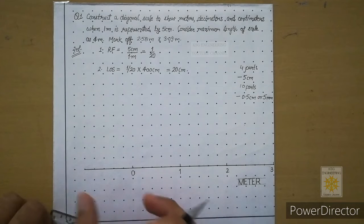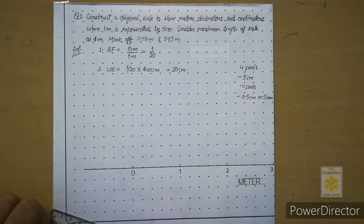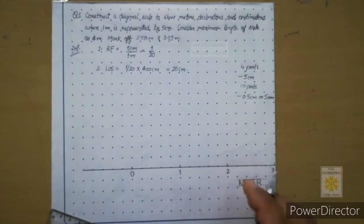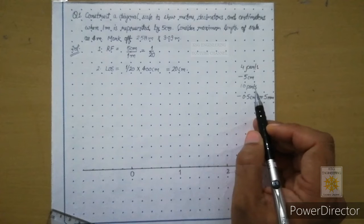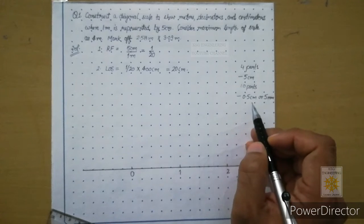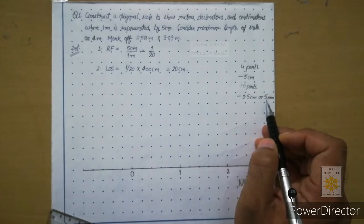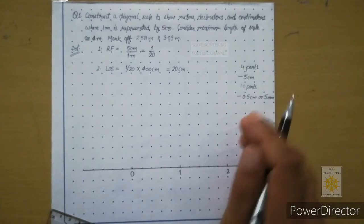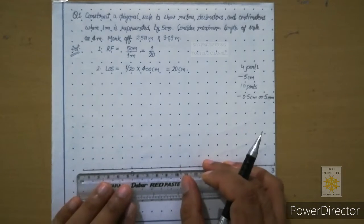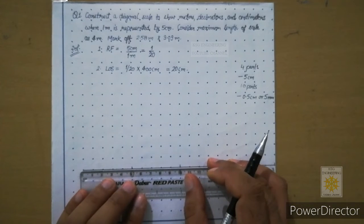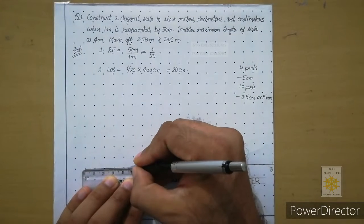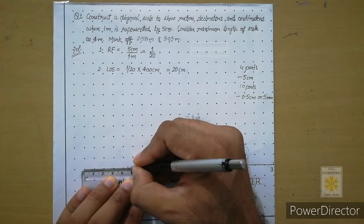After that we know we have to divide the first part into some equal number of parts. In this question we concluded that we have to make ten parts and each part will be of five millimeters or 0.5 centimeters. With the help of the scale, let us make ten parts over here, each part being 0.5 centimeters or five millimeters.